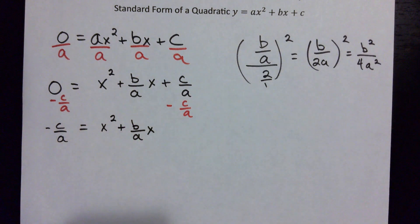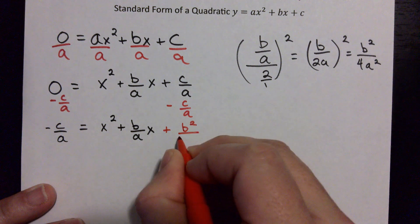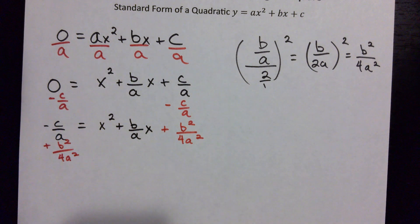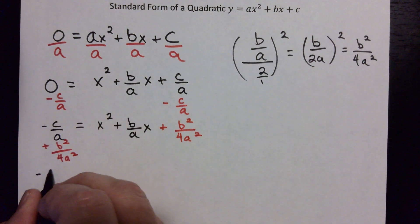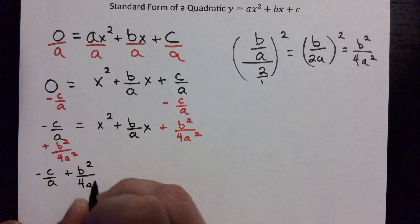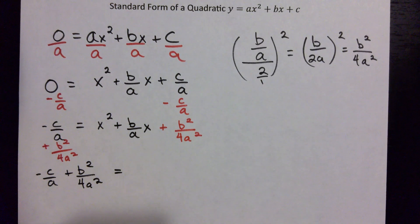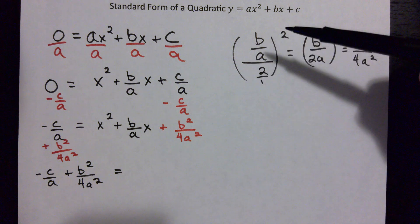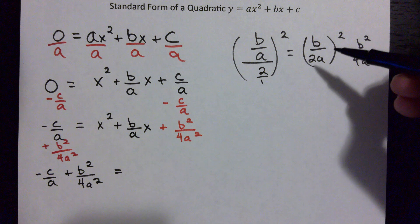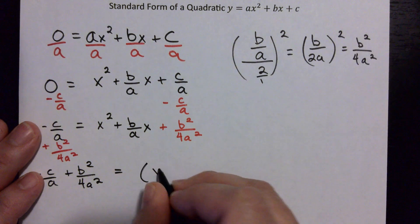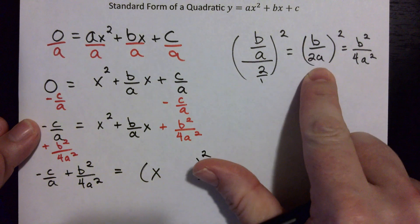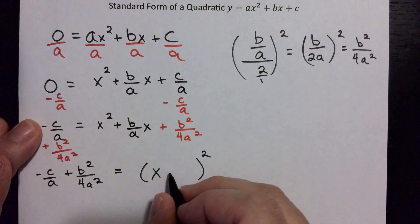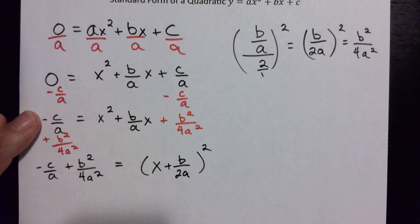We add that value — b²/4a² — to both sides. On the left we add b²/4a², and on the right we add b²/4a² as well. That gives us: negative c/a + b²/4a² on the left side equals, on the right side, the completed square. If you've watched my video on completing the square, you know that the right side factors into (x + b/(2a))².